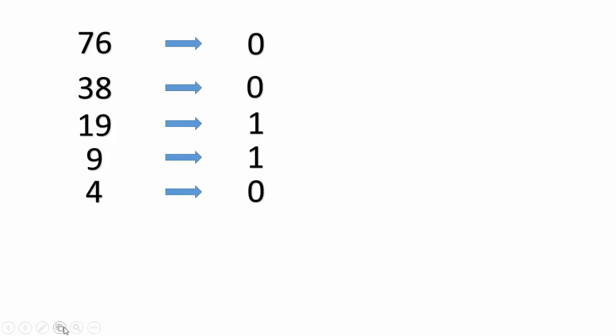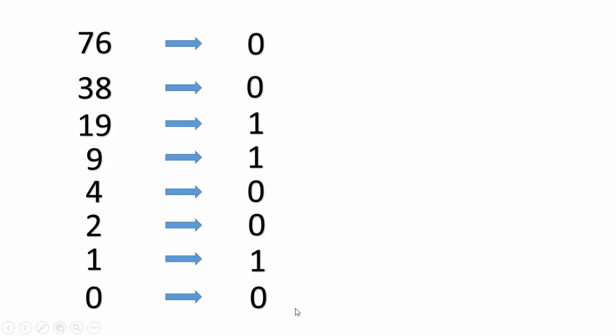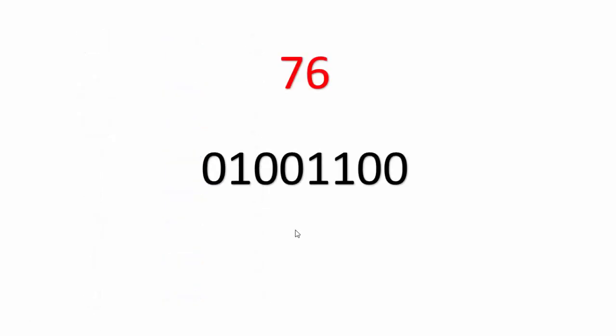Now 4 is an even number, we write down 0 and divide by 2 to get 2. Again divide by 2 to get 1, which is odd — we write down 1, subtract 1 from 1 and we get 0, and the process ends. The MSB is at the bottommost position and LSB at the topmost, so the binary of 76 is 01001100.